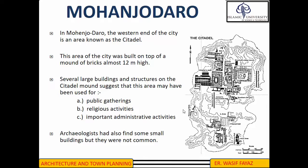The Citadel was located at the western end of the city of Mohenjo-daro. The area was built on top of a mound of bricks almost 12 meters high. Archaeologists have unearthed several large buildings and structures on the Citadel mound that may suggest these buildings were used for public gatherings, religious activities, or important administrative activities.